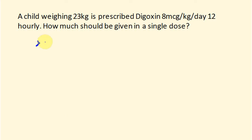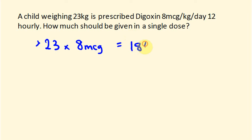So this child weighs 23 kilograms and they're getting 8 micrograms per kilogram. So if we multiply this by 23, we're going to get the answer of 184. So during the day, this kid should get 184 micrograms of this medication, digoxin.